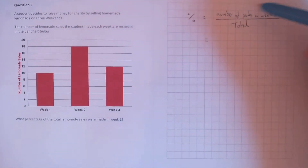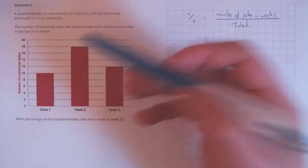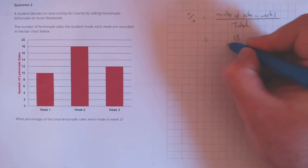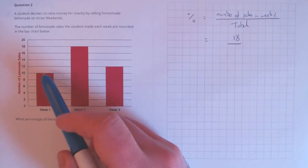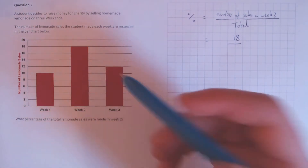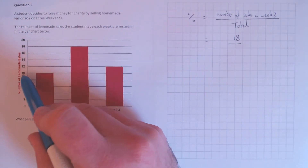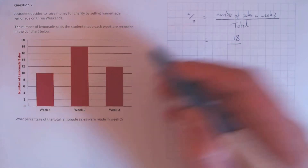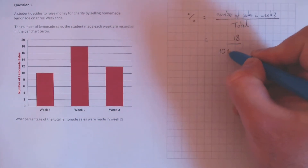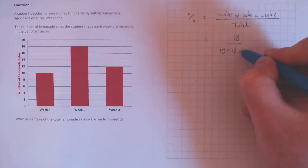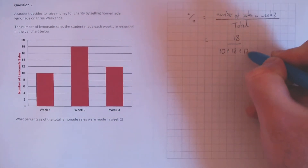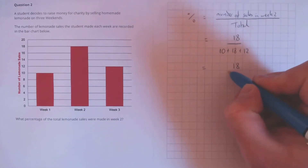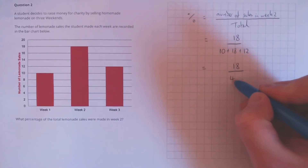The number of sales in week two is 18. And for the total, we need to add up the total of each of the three bars. That's 10 plus 18 plus 12, leaving us with 18 divided by 40.